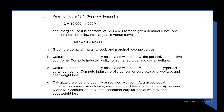Hi everyone, my name is Shin Musai and today we are going to do this question. This question says: suppose the demand is Q equals 10,000 minus 1,000 P, where P is price, and the marginal cost is constant at marginal cost equals 6.